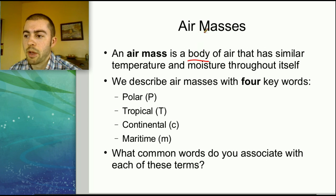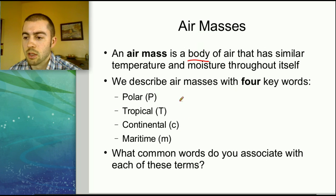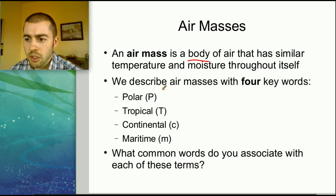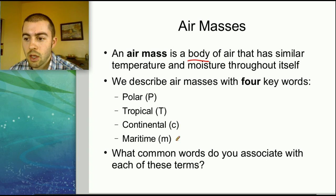We can describe air masses with four key words: polar, tropical, continental, and maritime. You also need to know the abbreviations for these. Polar is uppercase P, tropical is uppercase T, continental is lowercase c, and maritime is lowercase m.